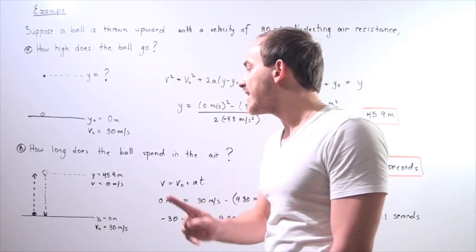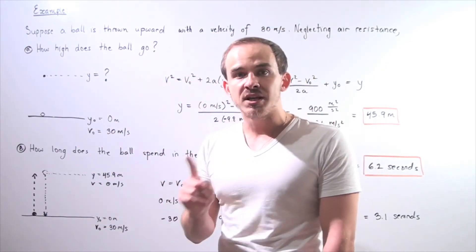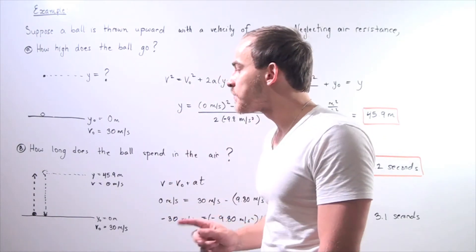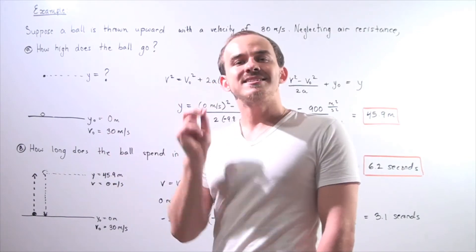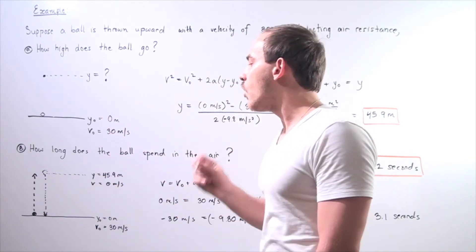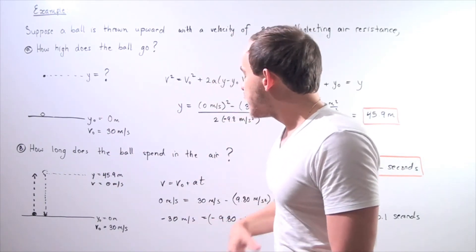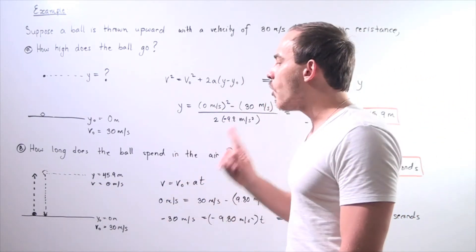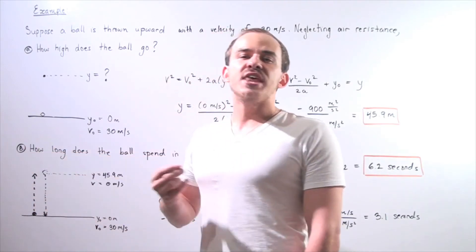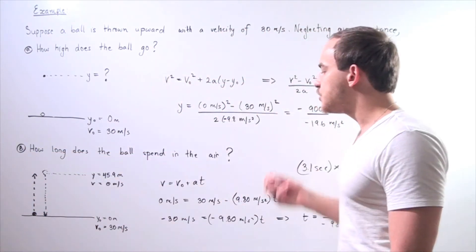Now because our acceleration is constant, because we neglect air resistance, the time it takes the ball to travel upward is the same exact time as it takes the ball to travel downward. So the way we're going to attack this problem is by finding the time it takes the ball to travel upward, and then multiply that value by 2.